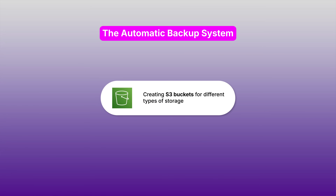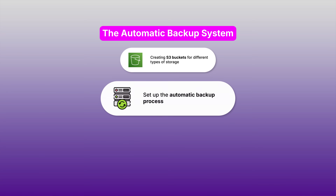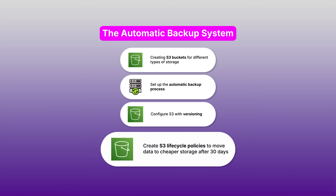The first step is creating S3 buckets, which are storage containers. We create different buckets for different types of data — one called 'documents-backups', another 'photos-backups', and another 'database-backup'. This organization makes it easy to find specific files when you need to restore something. Next, we set up the automatic backup process. Business owners install a small script on their computers that runs every night at 2am. This script identifies important files and automatically uploads them to S3. We then configure S3 with versioning — if someone accidentally deletes a file or saves over an important document, S3 keeps the old version so you can restore any file from any previous day.